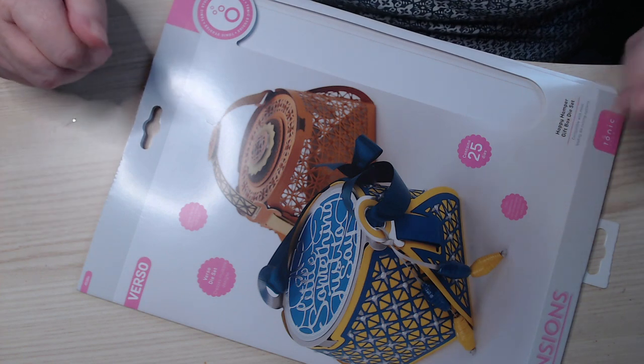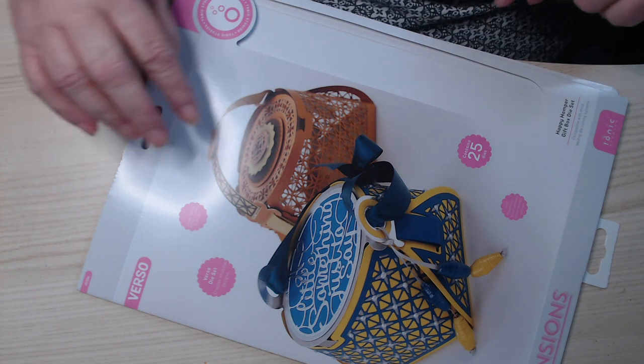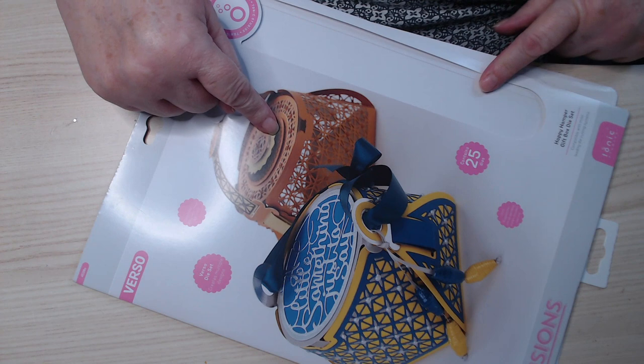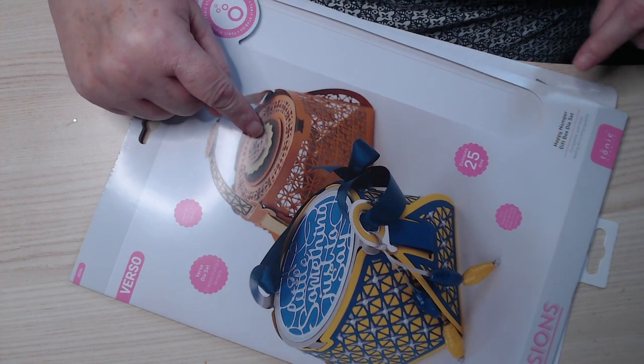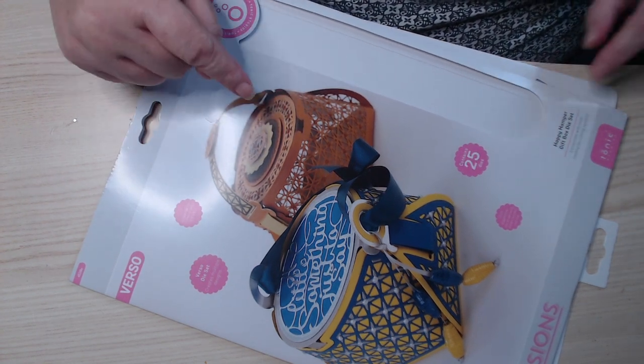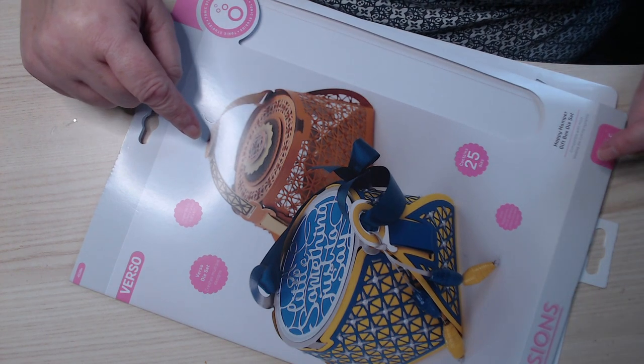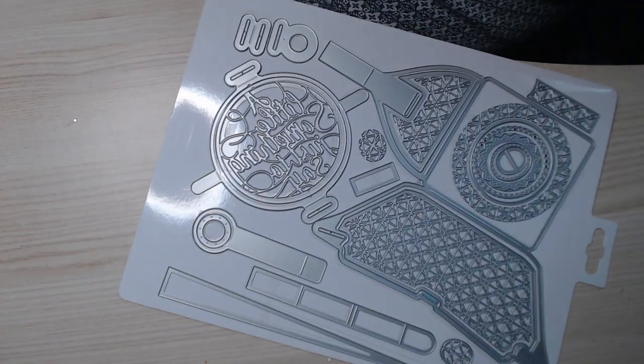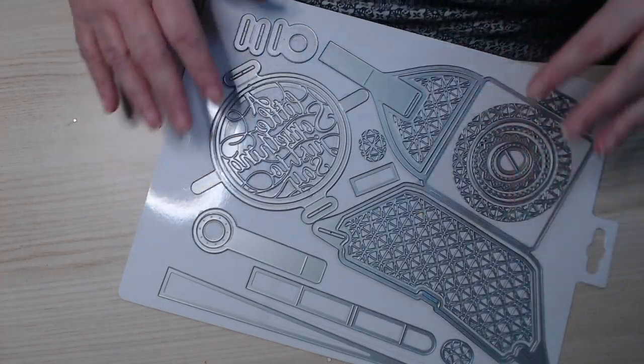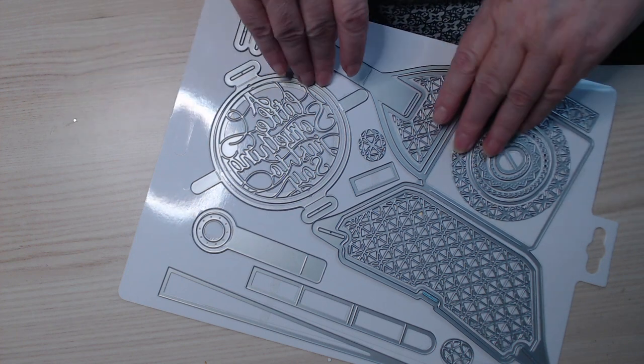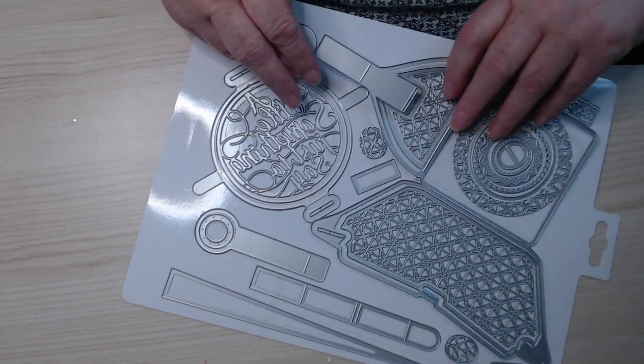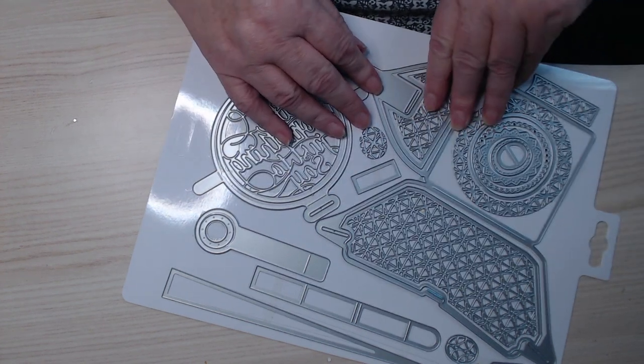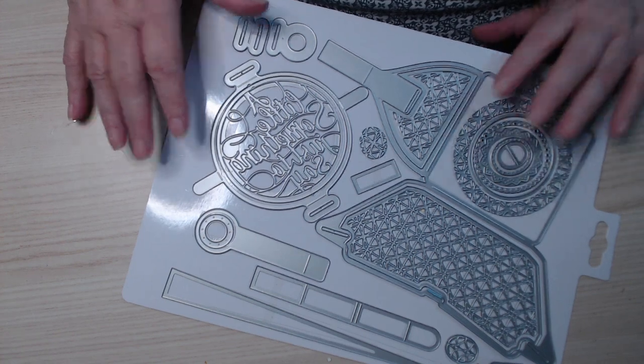Hello and welcome to my channel. My name is Julie and today I'm going to share with you how to make this one here. I don't know I've done this one but it's really really lovely. Well I'm going to attempt to make it anyway. This die set is called the Happy Amper gift box die set. This is the die set.